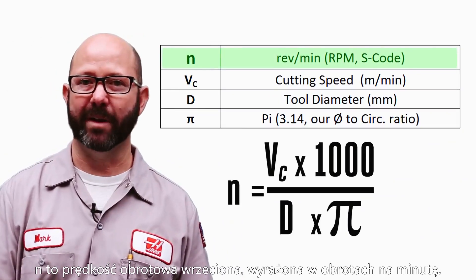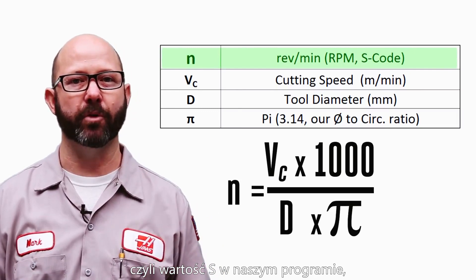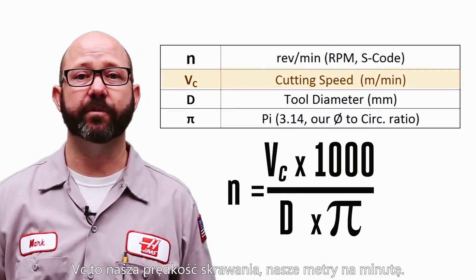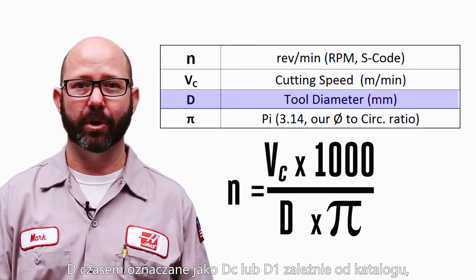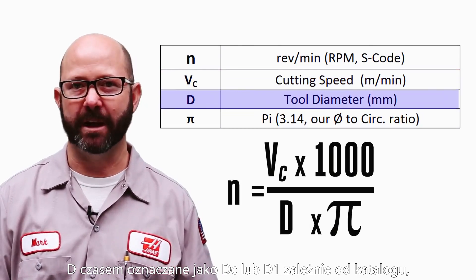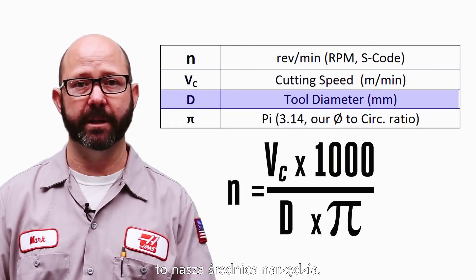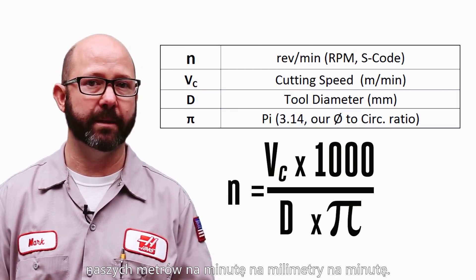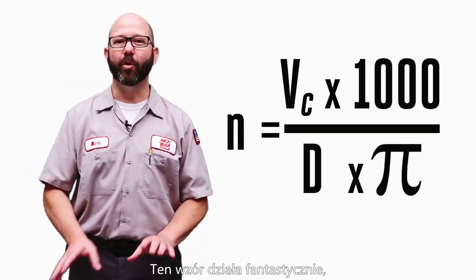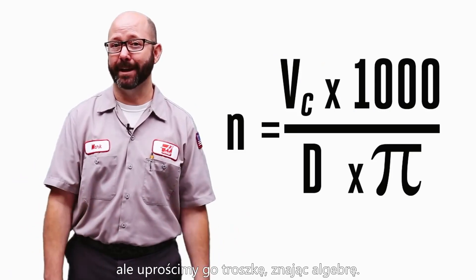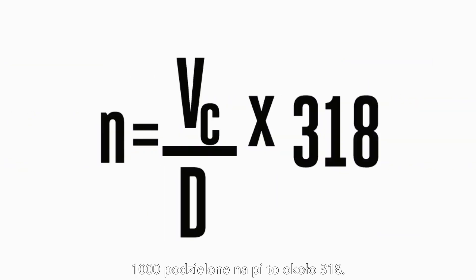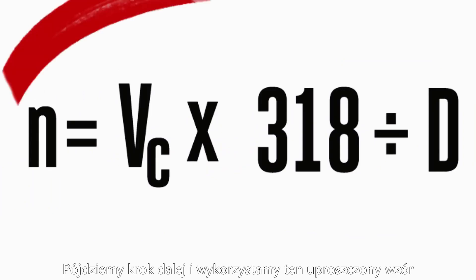N is our RPM — revolutions per minute — that's the S code in our program, what we're solving for. VC is our cutting speed, our surface meters per minute. D, or sometimes DC or D1 depending on the catalog, is our tool diameter in millimeters. The 1,000 in this formula converts our meters per minute into millimeters per minute. We're going to simplify using algebra: 1,000 divided by pi is about 318, and we'll use that simplified formula for the rest of the video.